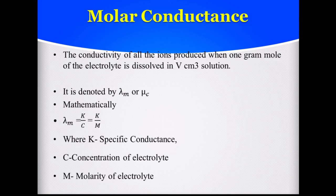Next, molar conductance. Molar conductance and equivalence conductance are similar; the only difference is that in equivalence conductance you take gram equivalents, whereas here you take gram moles. Molar conductance is defined as the conductivity of all the ions produced when 1 gram mole of electrolyte is dissolved in V cm³ of solution. It is denoted by λM. Mathematically, λM = K/C = K/M, where K is specific conductance, C is concentration, and M is the molarity of the electrolyte.